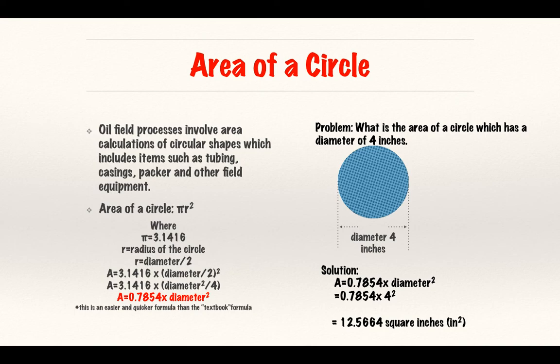We have so many circular shapes, including tubing, casing, packers, so many field equipment and accessories. You have to calculate volumes, and area will be the basis for calculating volume. We're all familiar with the formula pi r squared, where pi is 3.1416.